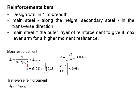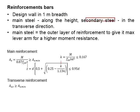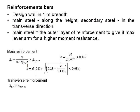The design of a retaining wall is similar to the design of a slab. It is normally designed on the basis of one meter width. The main steel bar is provided along its height, while the secondary steel bar runs in the transverse direction. The main steel bar is normally provided at the outer layer of reinforcement.